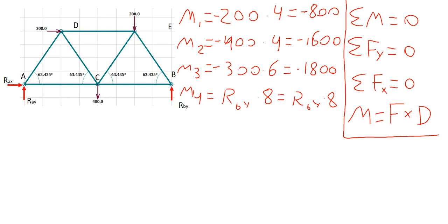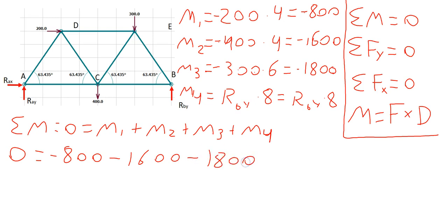When we plug those into our equation, we get the sum of the moments is equal to 0, which is equal to moment 1 plus moment 2 plus moment 3 plus moment 4. As we make our substitutions, we see that 0 is equal to negative 800 minus 1,600 minus 1,800 plus RBY times 8.